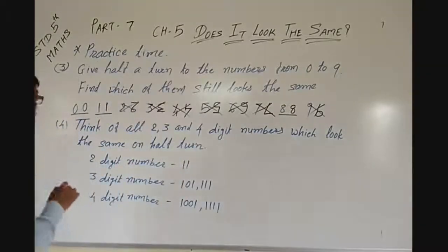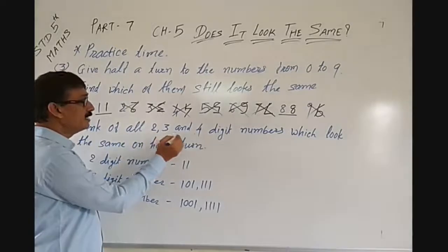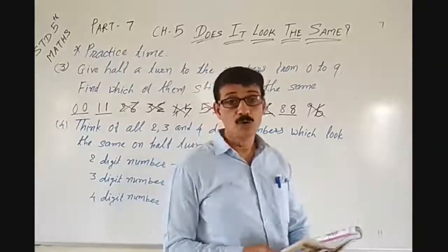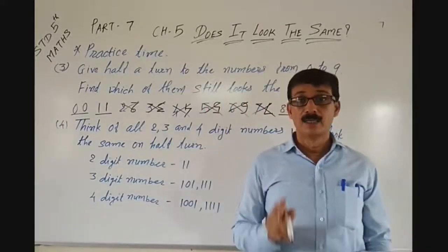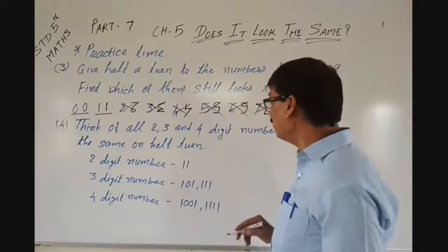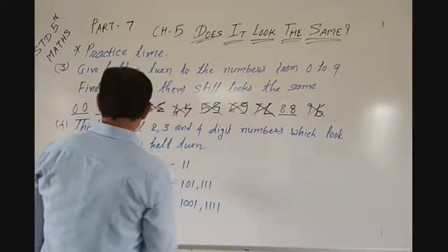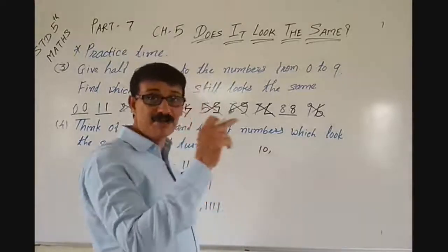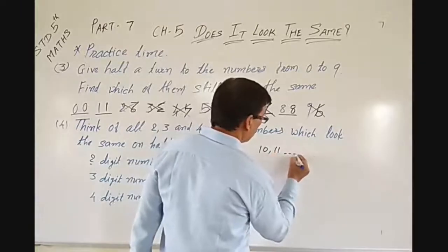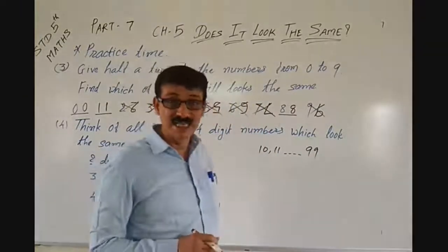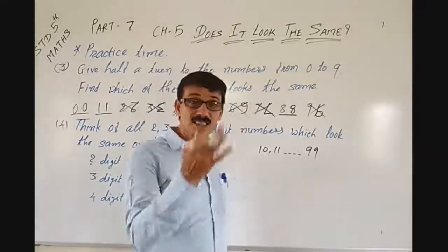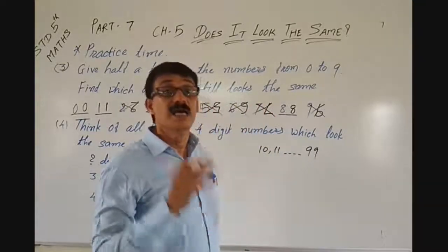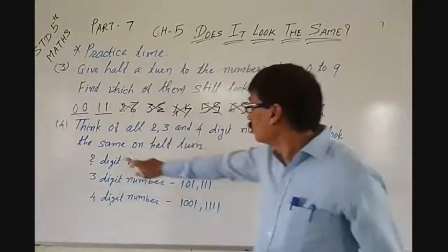Next practice: find 2, 3 and 4 digit numbers which look the same on a half turn. First, we should know which are 2-digit numbers. Two digit numbers start from 10 — 10, 11, 12, 13, 14, 15 — up to 99. All numbers from 10 to 99 are two digit numbers. Let's find out which numbers look the same on half turn.